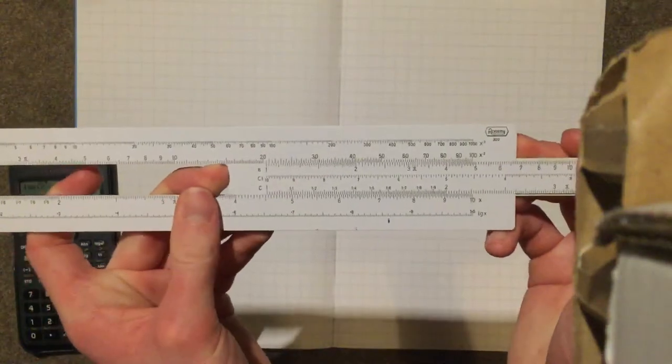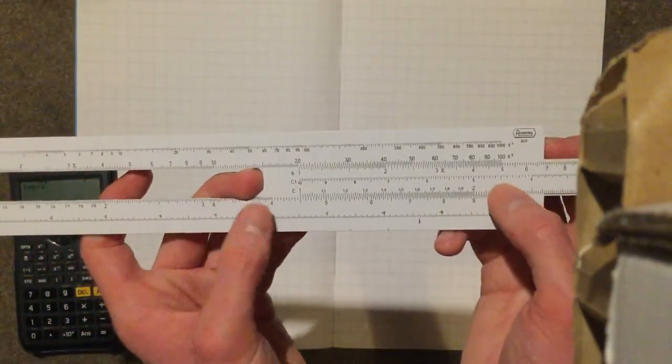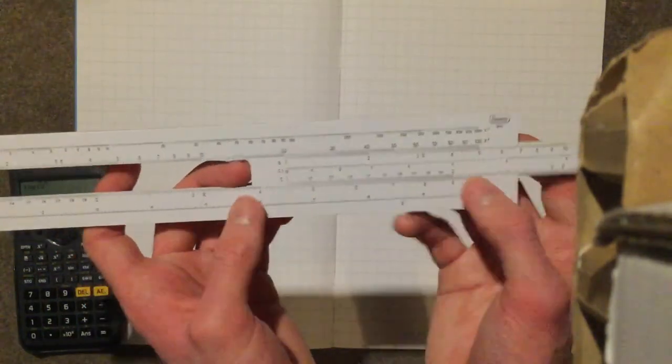And now let's do 9 divided by 2. 9, 2. In between the 4 and the 5, it's 4.5.